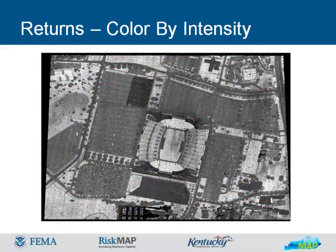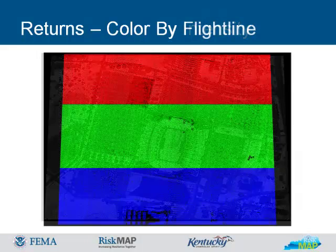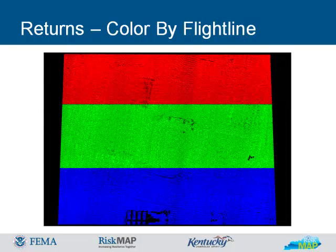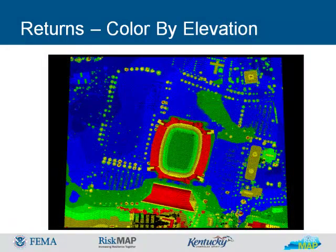This is not a black and white aerial photograph, but the return data colored by intensity. Each type of surface returns the signal to the sensor at a different intensity, providing information for processing classifications and display. Flightline data can provide valuable reference information about what is behind the data and how it was collected. This slide illustrates the different elevations — Commonwealth Stadium again in Lexington, where the higher elevations of the stadium are shown in red.